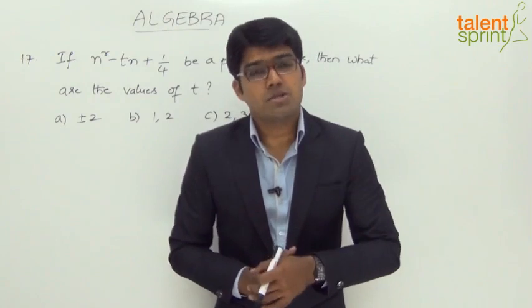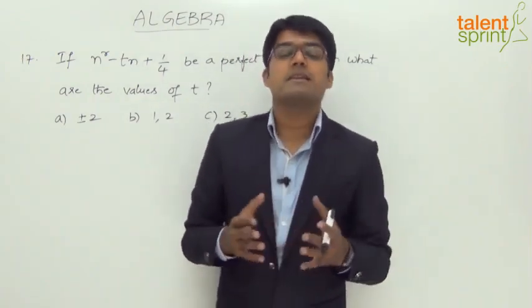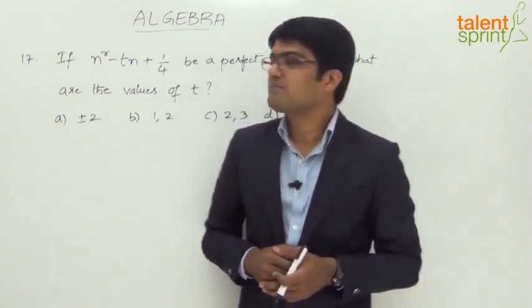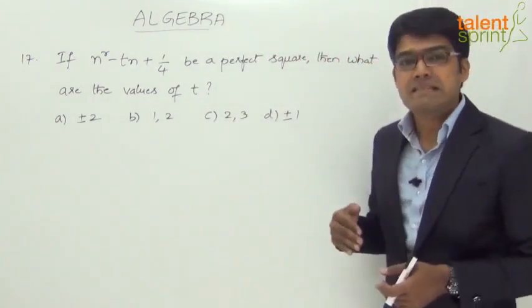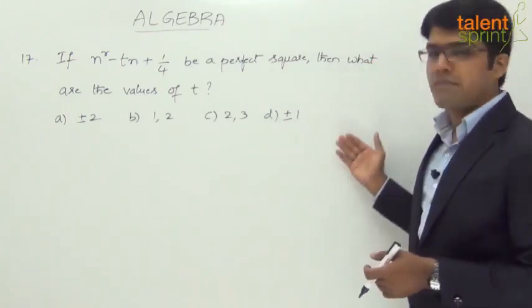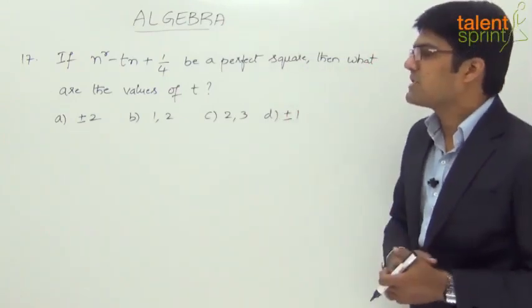Let us now look at another question which is based on finding out an unknown value such that the given expression becomes a perfect square. The question says if n^r minus tn plus 1/4 be a perfect square, then what are the values of t? The given answer options are plus or minus 2, 1 and 2, 2 and 3, and plus or minus 1.